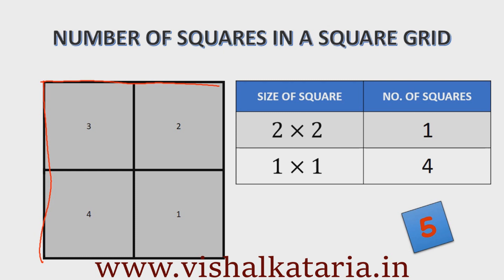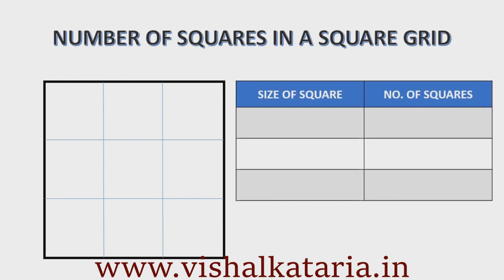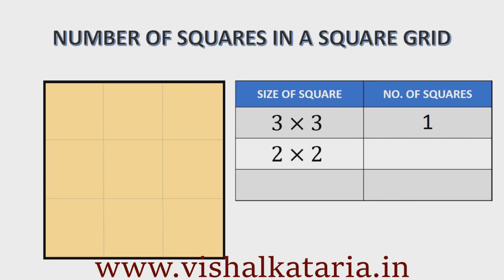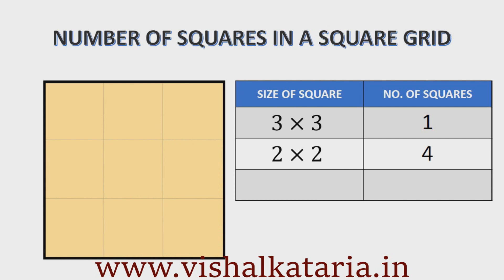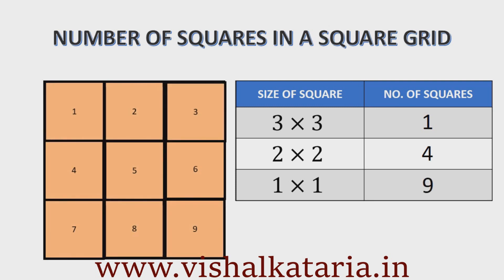Now let us consider a 3 by 3 square grid. The biggest square will be a 3 by 3 square and there is only one. After 3 by 3, the next smaller size is 2 by 2. Let us count carefully: first, second, third, and fourth — so there are four 2 by 2 squares. The smallest is of course 1 by 1, and there are nine 1 by 1 squares. Adding all of these, the total number of squares in a 3 by 3 square grid is 14.